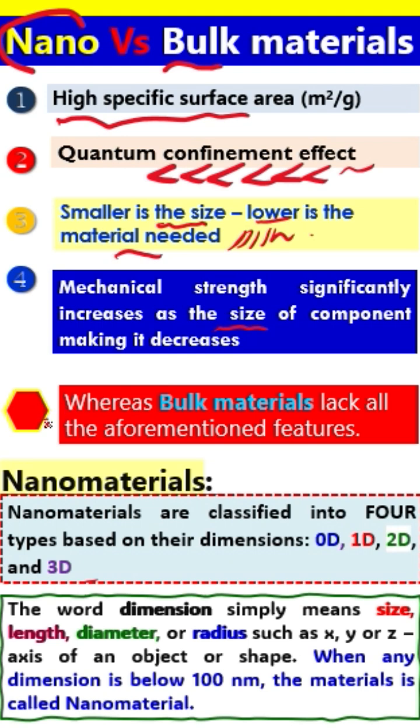So while bulk material lacks all these four characteristics, nanomaterials possess them, making nanomaterials distinctly different.